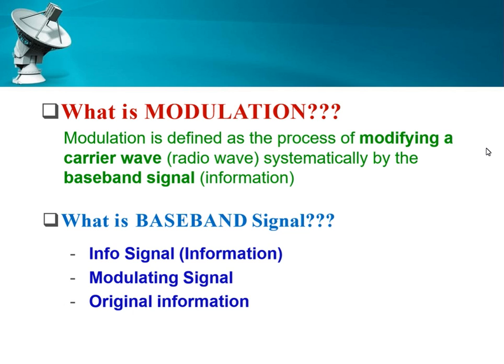So basically, what is modulation? Modulation is defined as the process of modifying a carrier wave, which is our radio wave, systematically by the baseband signal or the information we are trying to transmit. The baseband signal refers to the information signal we will be transmitting. This is also referred to in some books as the modulating signal or the original information.